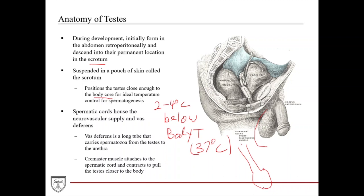The spermatic cords carry the neurovascular supply and the vas deferens — that is, the artery, the vein, the nerves, and the vas deferens. The vas deferens is a long tube that carries spermatozoa from the testes to the urethra, getting sperm from where they're produced down into the urethra for reproduction. The vas deferens comes out of the scrotum, up into the pelvis, travels over the bladder, and then connects to the ejaculatory duct, which collects secretions from other male reproductive glands and empties into the urethra.